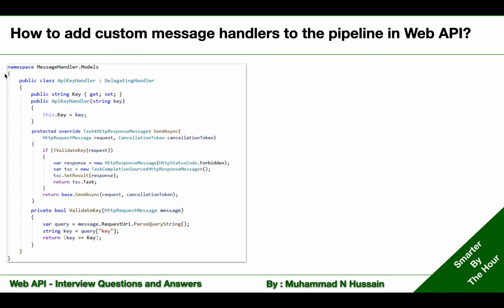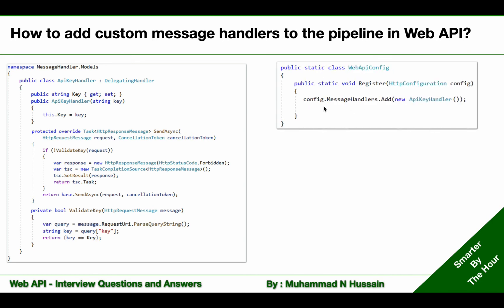Now that we have created a custom message handler, to add it to the pipeline we can call the configuration's MessageHandlers collection Add method and pass the newly created custom message handler to that method. We can do that in the Register method in the Web API class.